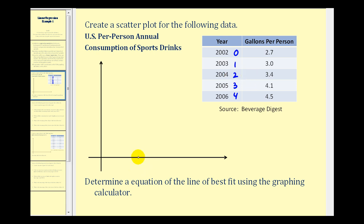Let's go ahead and label our x and y axes. So the x axis will be the number of years after 2002. And the y axis will represent the number of gallons per person.